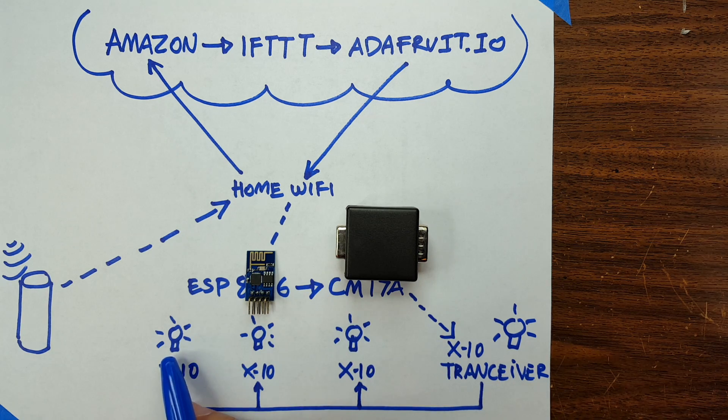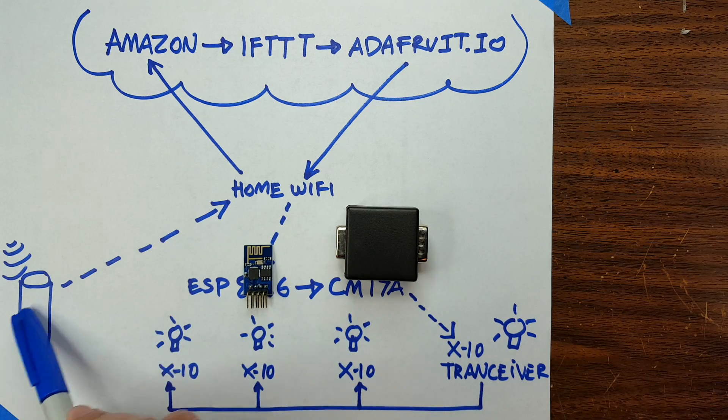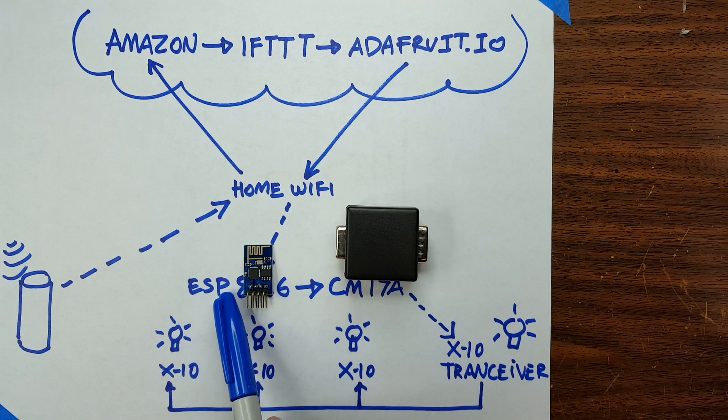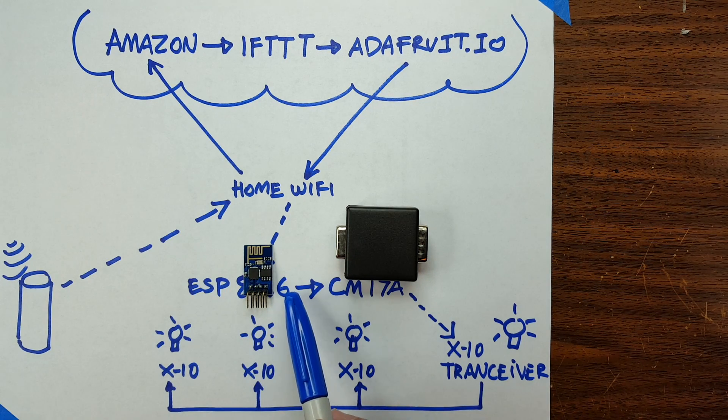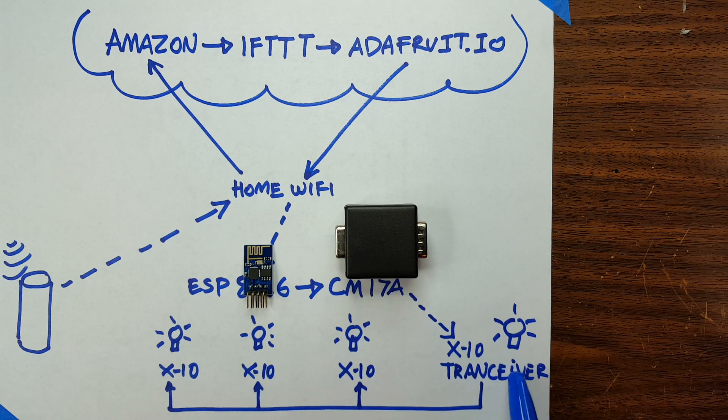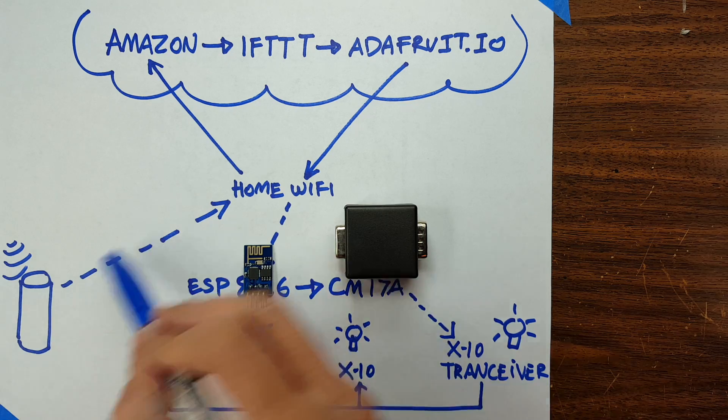So that's it. It basically goes through here to Amazon to Adafruit.io. It subscribes, it listens to the command. When there's a proper command comes in—light on—it sends the proper command to the proper device, and then the proper device turns on or off depending on the command.